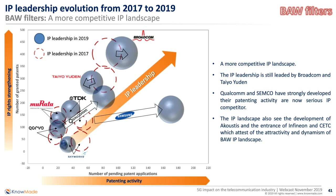Qualcomm and Samsung Electro-Mechanics now have a very interesting IP position, and in coming years they will be able to compete at the IP level against Broadcom and TaiyoYuden. This could reshuffle the IP landscape and may impact the market, especially SEMCO, which has the power to do so. Another interesting sign of a very dynamic and competitive IP landscape is the growth of smaller IP players — for example, Akoustis, a small IP player with very specific single-crystal bulk acoustic wave filter technology that has managed to get patents granted worldwide.